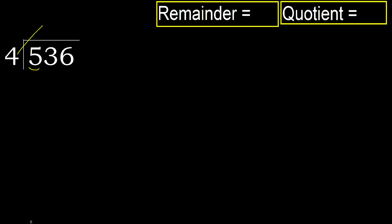Multiply by which number is nearest to 5 but not greater. 4 multiplied by 2 is 8 — 8 is greater. Multiply by 1 is 4. It is not greater, ok. Subtract. 5 minus 4 is 1. Next.